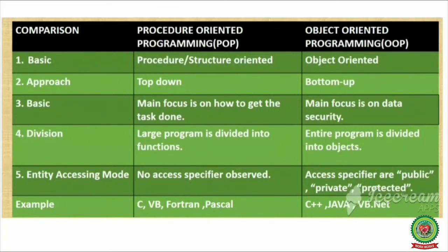Number 4: In Procedure Oriented Programming, a large program is divided into functions — a single program is divided into a number of parts to complete the task. In case of Object Oriented Programming, the entire program is divided into objects.